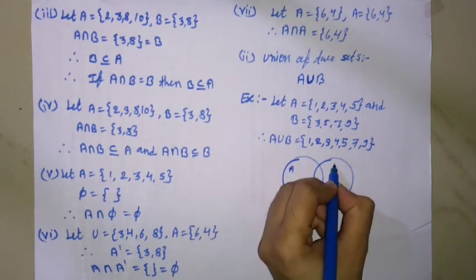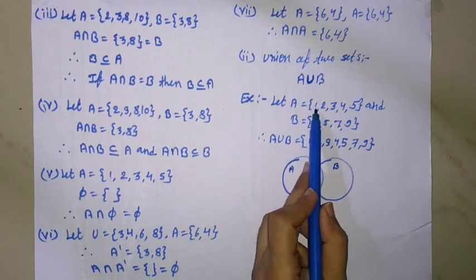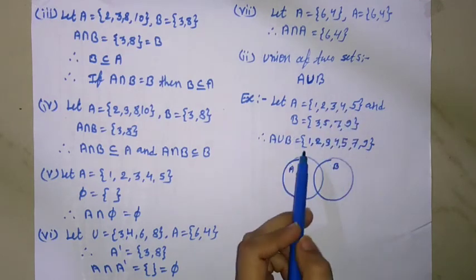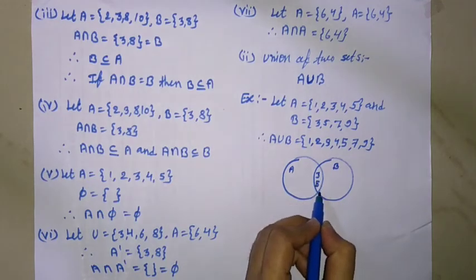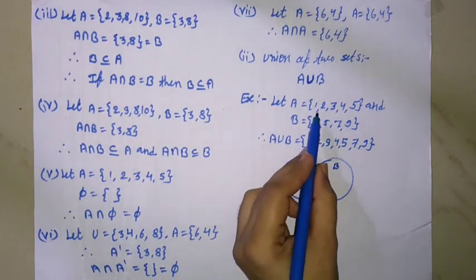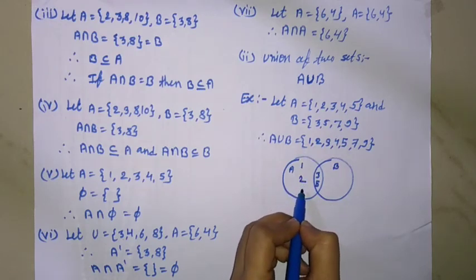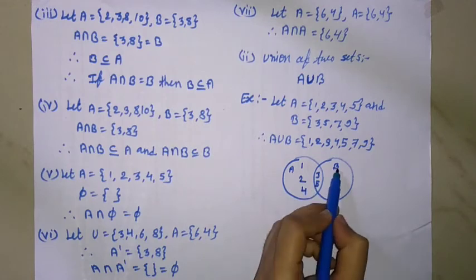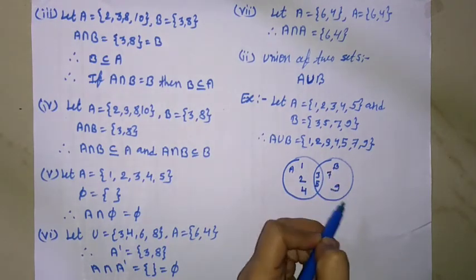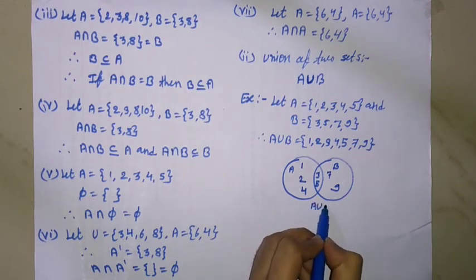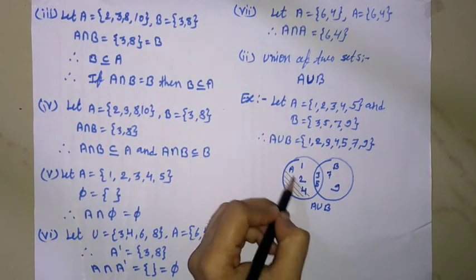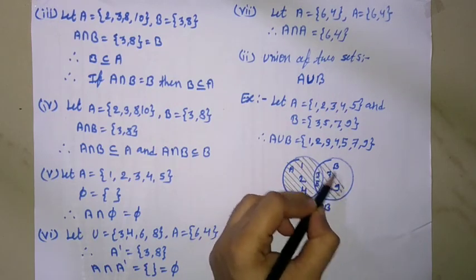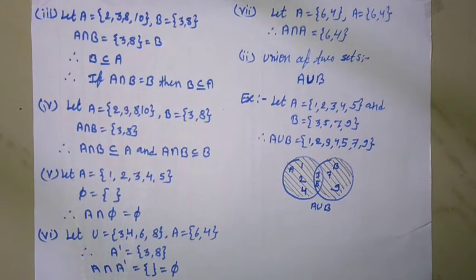We can represent this example in a Venn diagram. Set A and set B. Elements of set A are 1, 2, 3, 4, 5. Elements 3 and 5 are common to both sets. Remaining elements are 1, 2, 4 in A only, and 7 and 9 in B only. A union B covers the entire shaded region in the Venn diagram representing all elements of A and B.